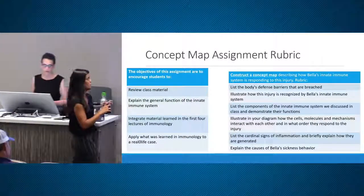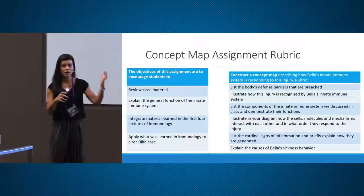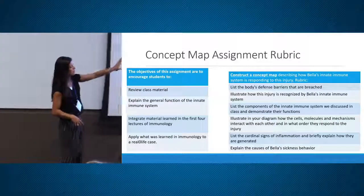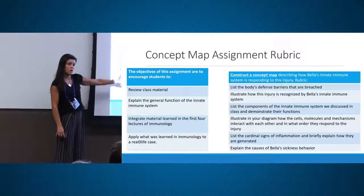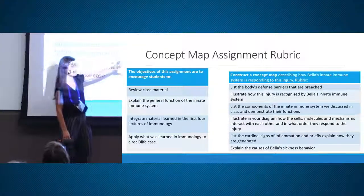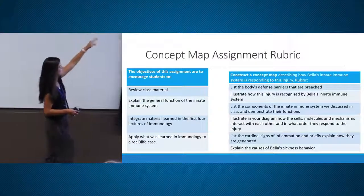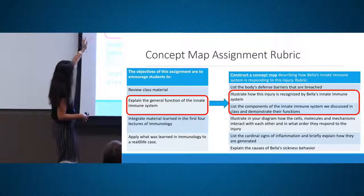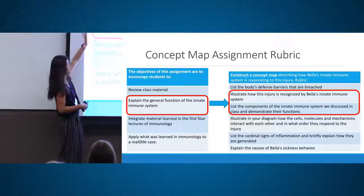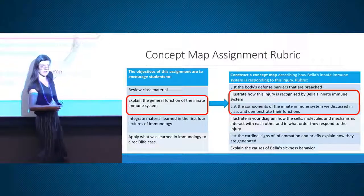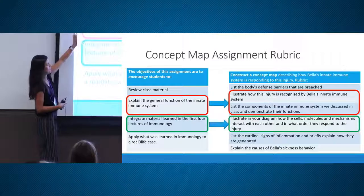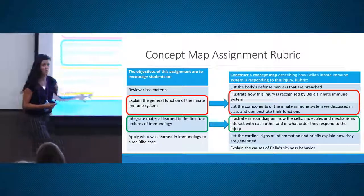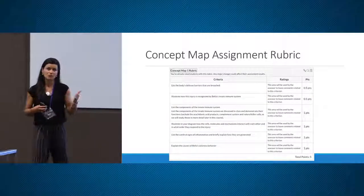Going back to rubrics in general, I want to show you some examples. You can take these rubrics and add them to Canvas. I recommend that you align the objectives of your assignment with the criteria of the rubric. The first paragraph of the assignment states the objectives, and I created the rubric to reflect those learning outcomes. This creates transparency and alignment between expectations and assessment.